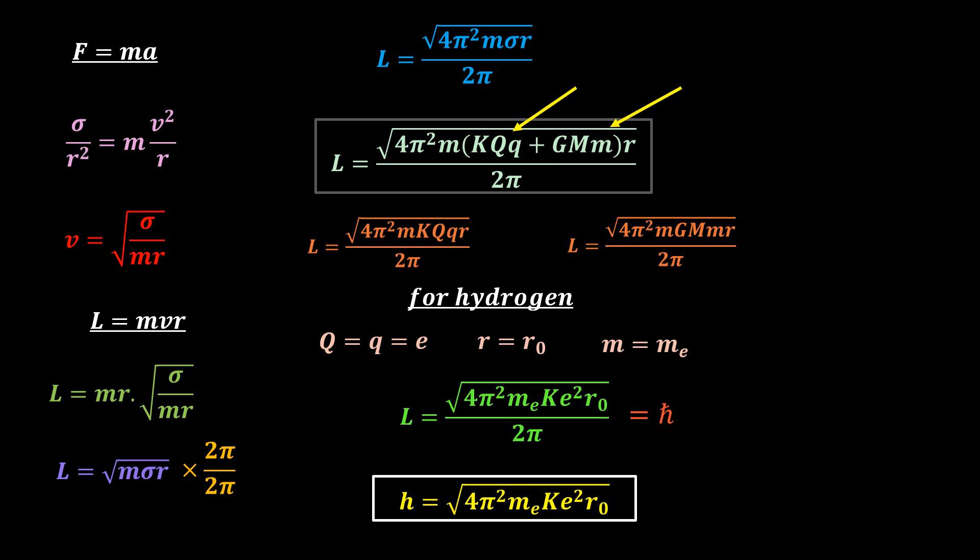To get an even better value for h, include the term Gmm since it is not zero. So for hydrogen, we can write L equal to h over 2 pi, the Bohr formula. Isn't this amazing? How you can get the fundamental quantum mechanical equation from pure classical analysis?